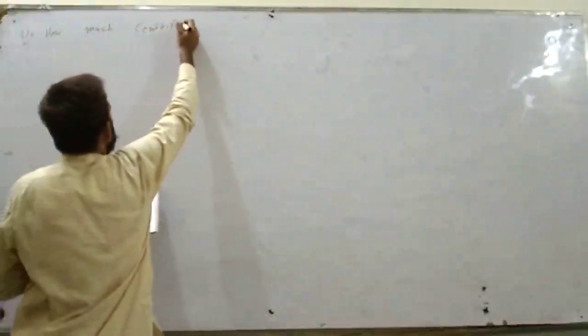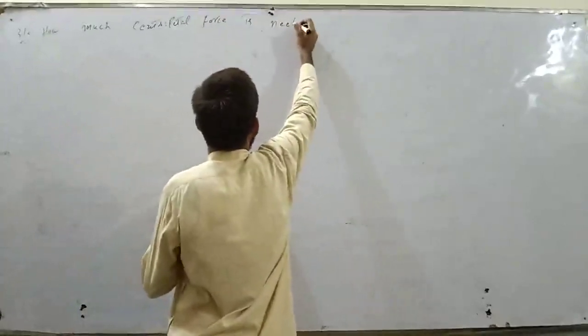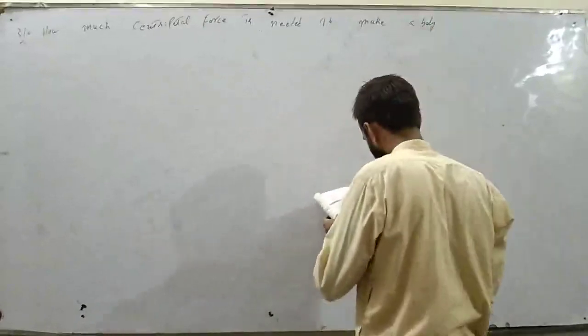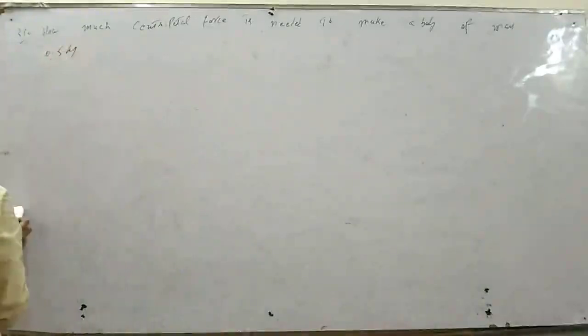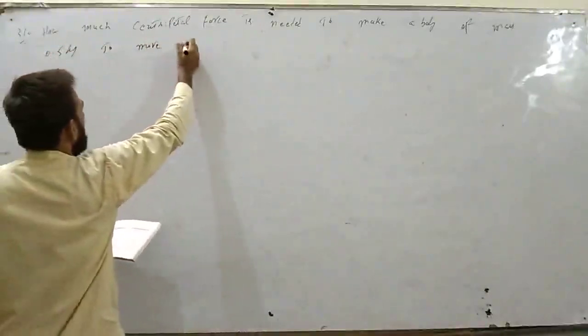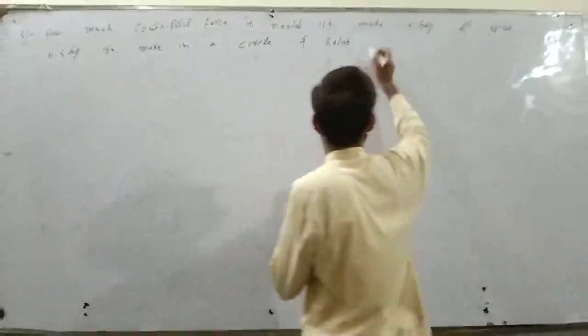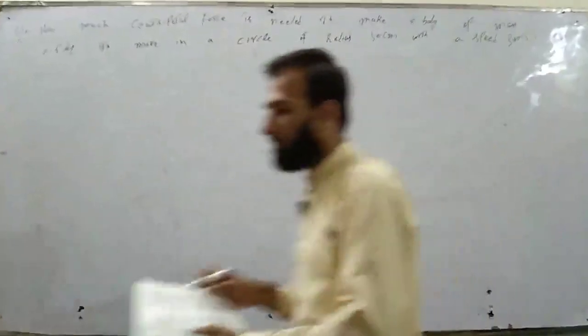Last numerical 3.10: how much centripetal force is needed to make a body of mass 0.5 kilogram move in a circle of radius 50 centimeter with a speed of 3 meter per second? Circle में move करना है - centripetal force find करनी है।